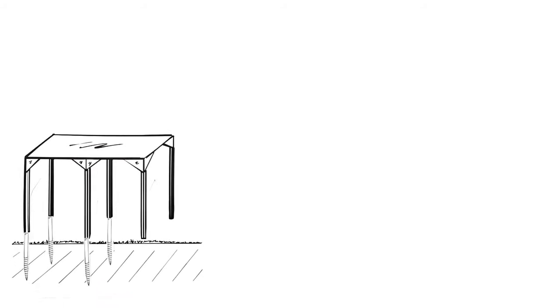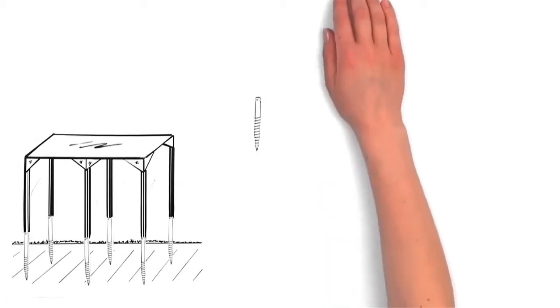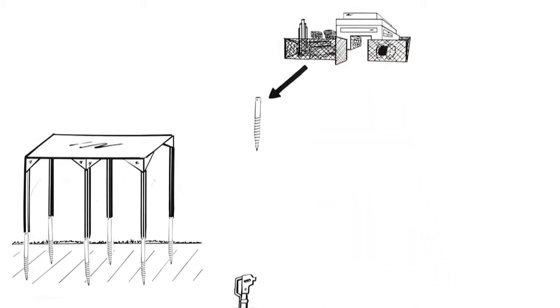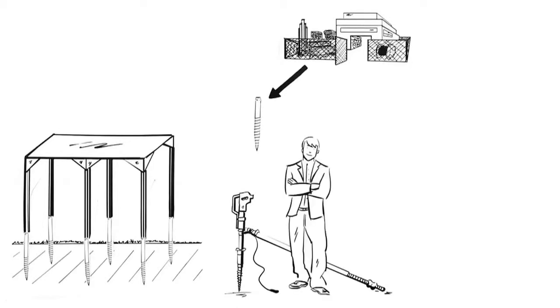Mr. Smith decides to anchor his carport with six ground screws. Depending on the size of their foundation, he can borrow a suitable hand screw machine from his builder's merchant and use it to drive in the screws himself. This would do the job for Mr. Smith's carport.